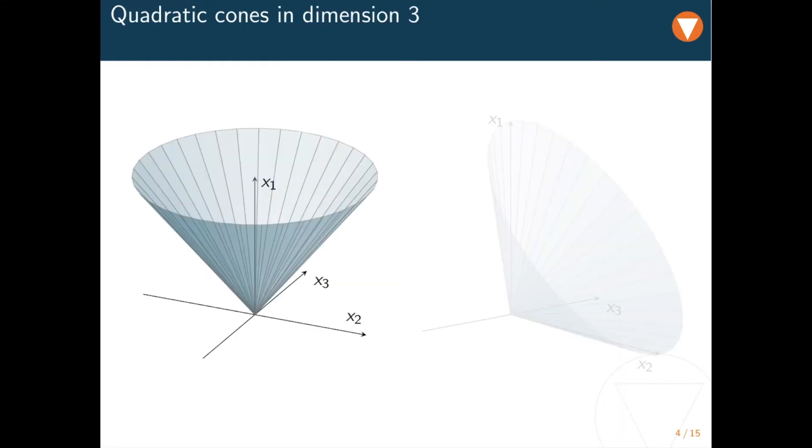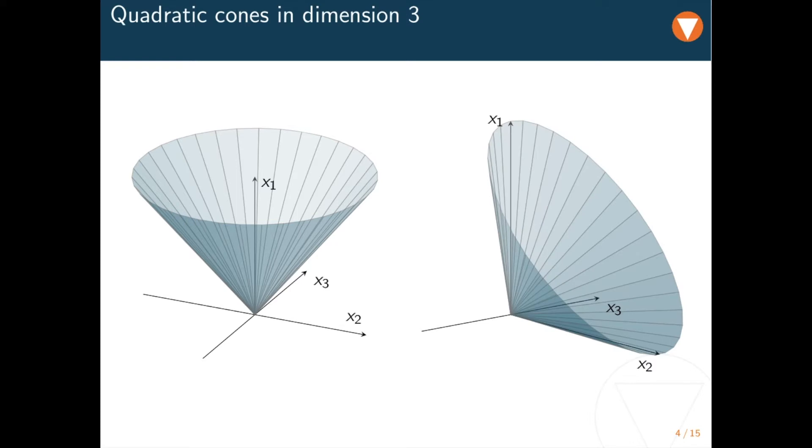These are visualizations of the truncated boundaries of the three-dimensional quadratic and rotated quadratic cones. You can see that they are somewhat equivalent to each other. However, every point in one cone can be mapped to the other through an orthogonal transformation. Depending on the modeling context however, one or the other might appear more natural as the cone of choice, and it makes therefore sense to include them both in our cone portfolio.